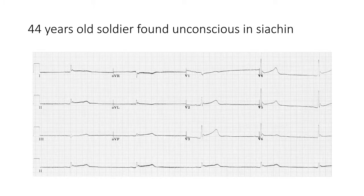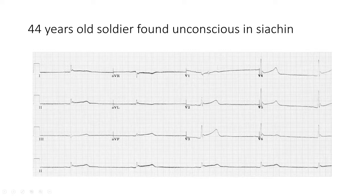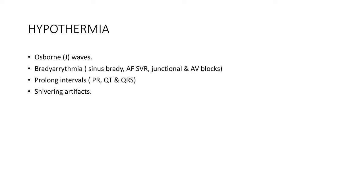This ECG is from a 44-year-old soldier found unconscious in Siachen. The clue in the scenario is Siachen — a very cold place. On the ECG, there is notching at the end of the QRS in limb leads and precordial leads — these are Osborn or J waves — along with marked bradycardia. Other findings of hypothermia include bradyarrhythmias, sinus bradycardia, atrial fibrillation with slow ventricular rate, junctional rhythms, AV blocks, and prolonged intervals (PR, QT, and QRS). Also look for shivering artifact on the ECG.